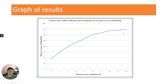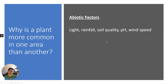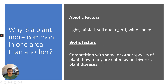A good biologist asks: why does bluebell cover increase further into the woodland? That's where your measurements for light, soil moisture, soil nutrients, pH, and other abiotic factors come in. You need to ask why a plant is more common in one area than another — it could be abiotic factors like rainfall, soil quality, or wind speed, or biotic factors like competition, herbivory, or plant disease.